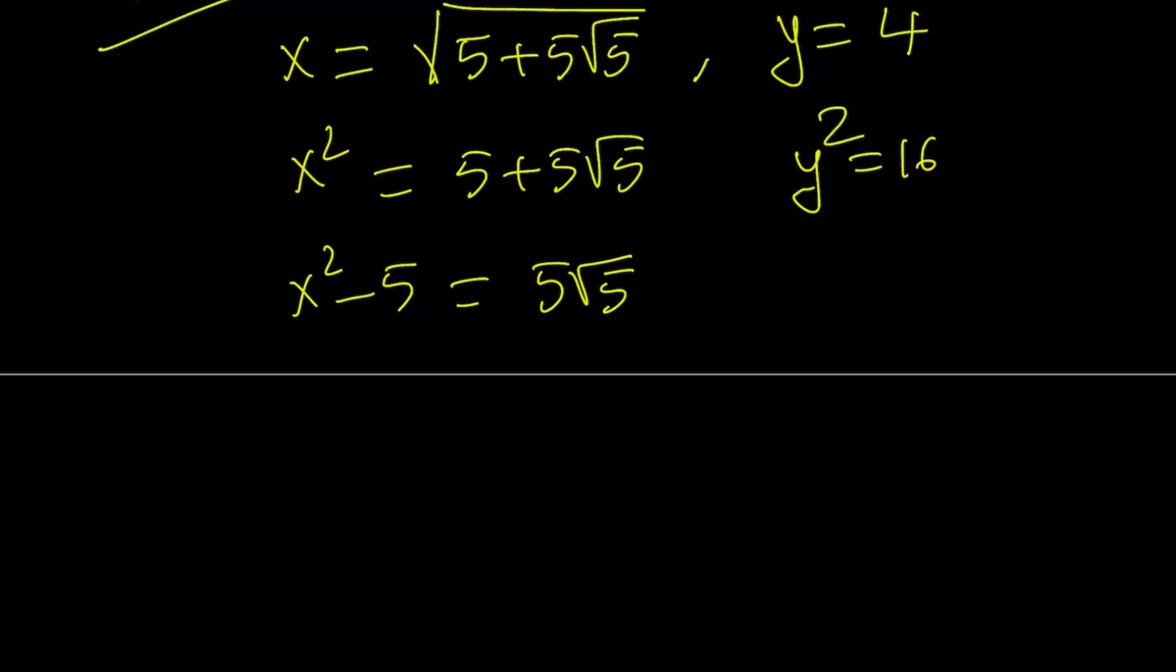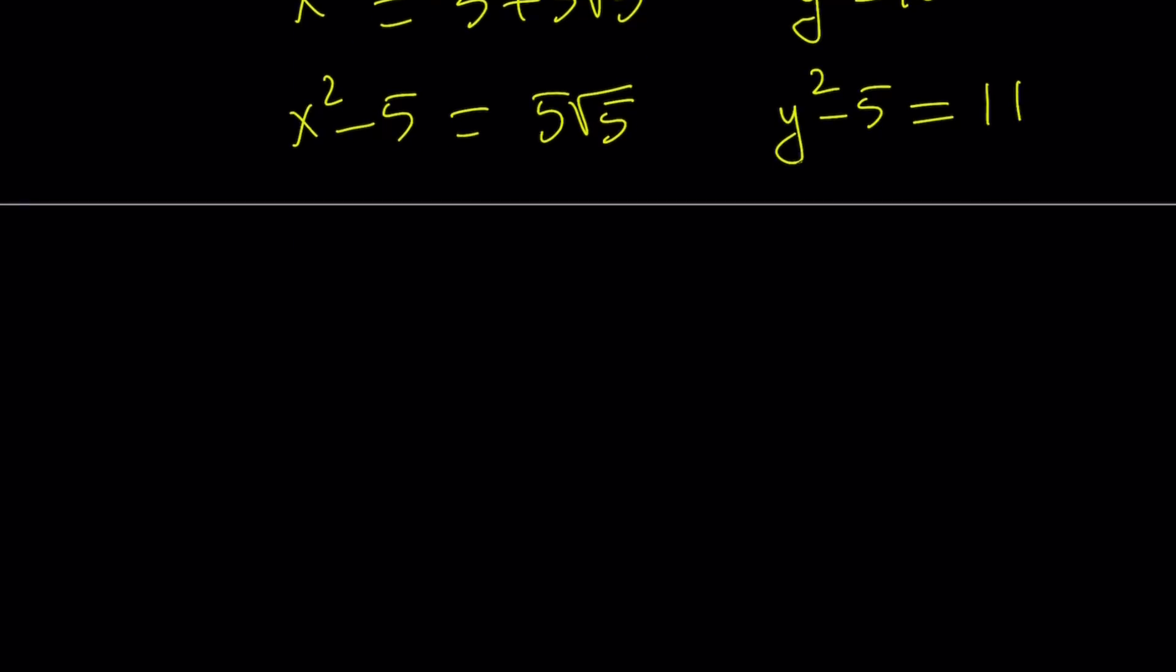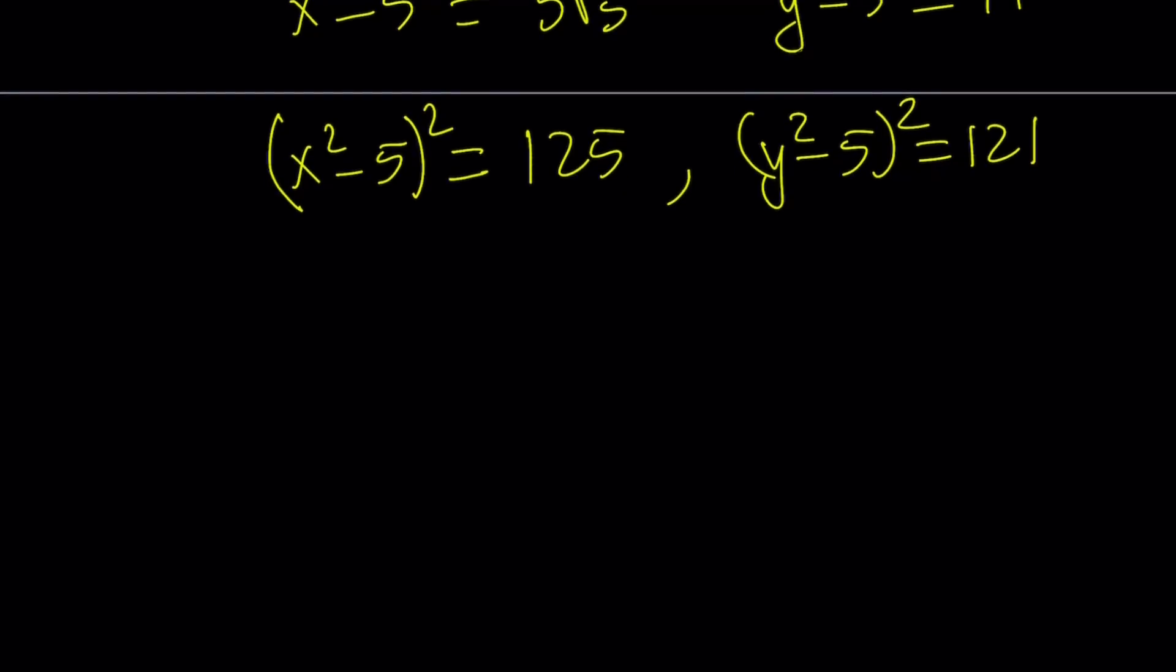And then subtract 5 because I want to isolate the radical and then I'll square again. But whatever you did here, do it here as well. So, y squared minus 5 is going to be 11. You get the idea? Now, I'm going to square both sides because that will get rid of the radical. 5 root 5 squared is 125 and 11 squared is 121. You see how close those numbers are? Pretty close.